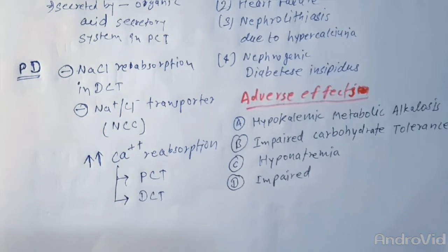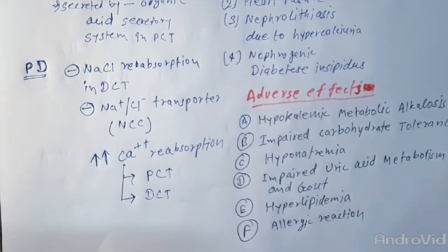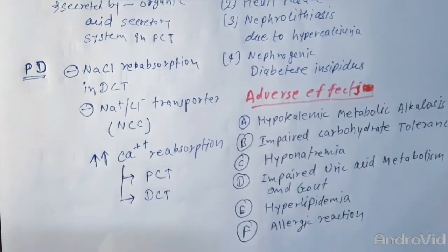They can also cause hyponatremia, impaired uric acid metabolism and gout, hyperlipidemia, and allergic reactions. Their contraindications are the same as loop diuretics.